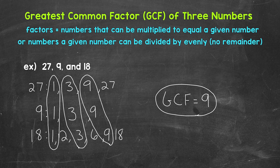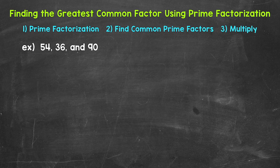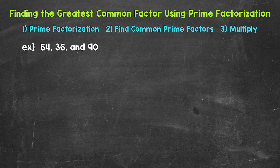Let's move on to another example where we will use prime factorization. I like using this strategy and find it helpful when working with numbers that are a little larger in value, because listing out all the factors can be kind of difficult and time consuming with larger numbers. This is a different approach — a different strategy to be familiar with when it comes to finding the greatest common factor. Our example: find the greatest common factor of 54, 36, and 90.